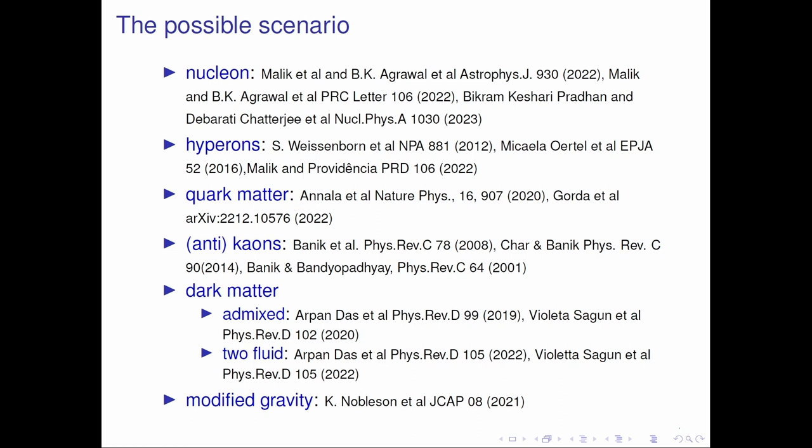There could be only nucleonic compositions. There can be exotic degrees of freedom such as hyperons, quark matter, antikaons, and also dark matter. Dark matter models vary depending on theoretical assumptions. There are two types of treatment: admixed, where dark matter and nuclear matter interact via the Higgs portal, and two-fluid, where individual equations of state interact only via gravity. There's also the possibility of modified gravity. The big question is how to decouple all these scenarios.